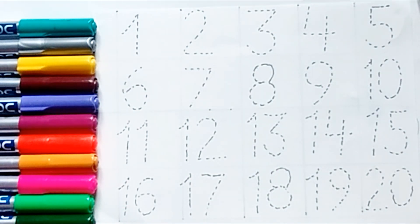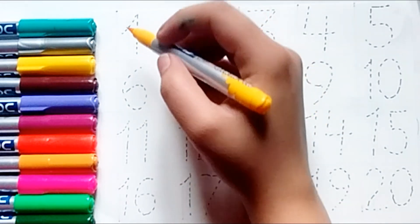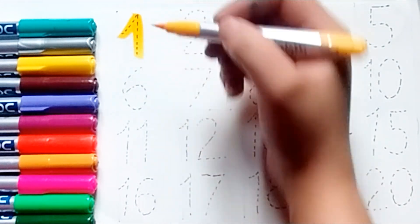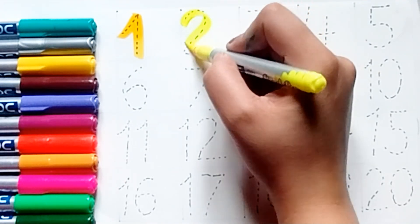Let's draw counting. Yellow color, 1. Light color, number 2.